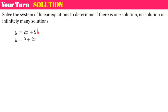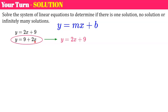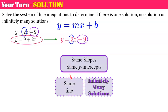Welcome back. The first equation is already in slope-intercept form. The second equation has its terms reversed, but using the commutative property of addition, I can rewrite 9 plus 2x as 2x plus 9. Now I can clearly see they're the same equation — same slope and same y-intercept — meaning the same line, and infinitely many solutions. If you graph it, you're graphing the same line twice and all points are in common.